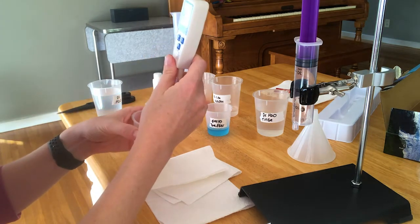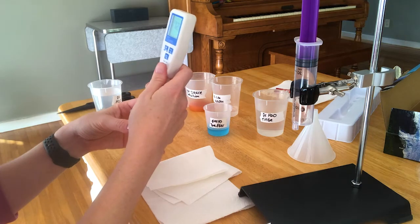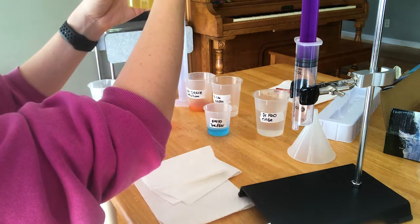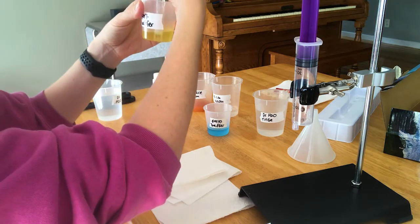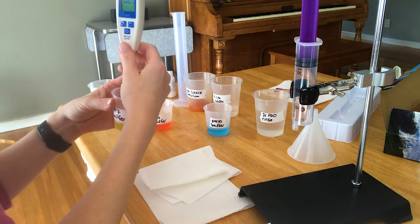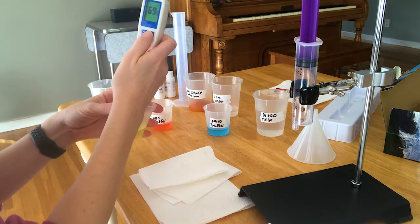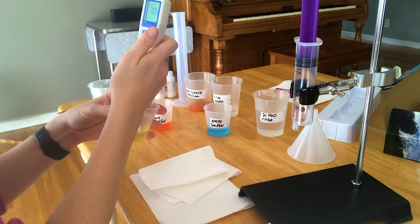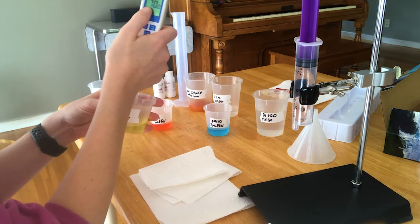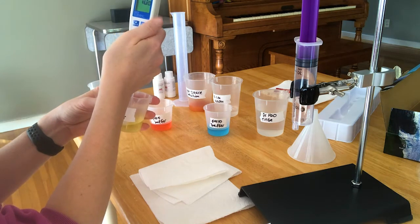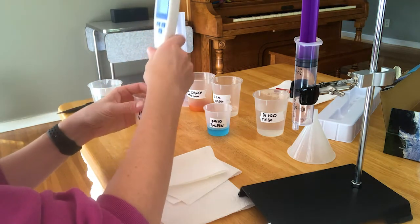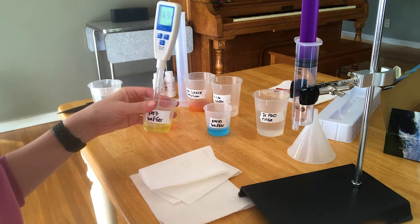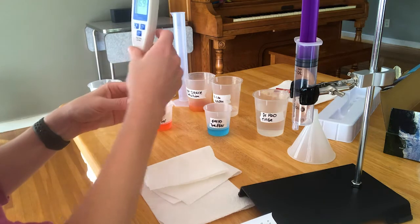First, start out with the pH 7 buffer. Make sure that that glass bulb is totally immersed under the solution, even if you have to tilt the beaker. Then you're just going to press this calibrate button. It's going to recognize that you're looking at a pH 7 buffer, so it'll say 7 on the face. And then I messed up here because you're supposed to wait until you get the message SA, and then it will say end when it's done. So I'm going to have to calibrate this one more time.